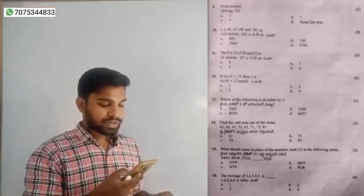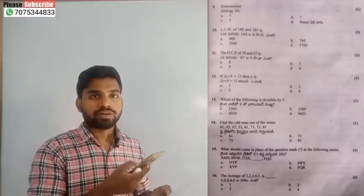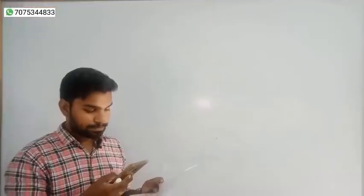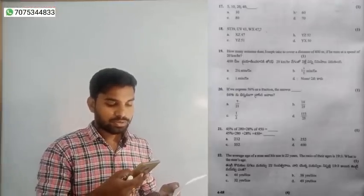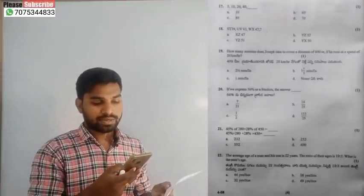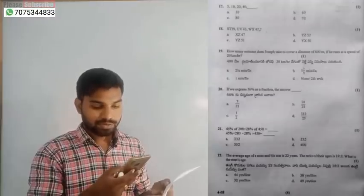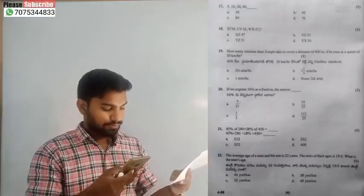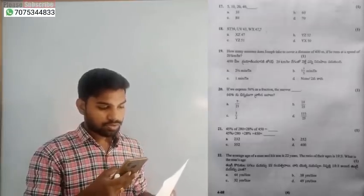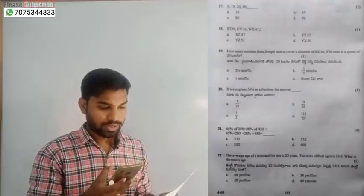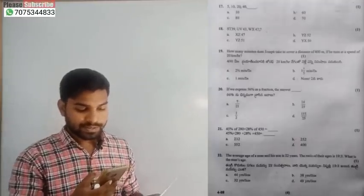Question number 16: the average of one, two, three, five — the middle number average is 3, and that is the correct answer. Question number 17: the next number — 80, option C, is the correct answer. Questions 18 and 19: option B is the correct answer.